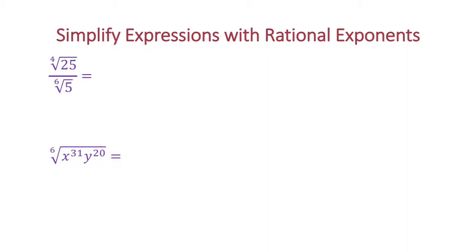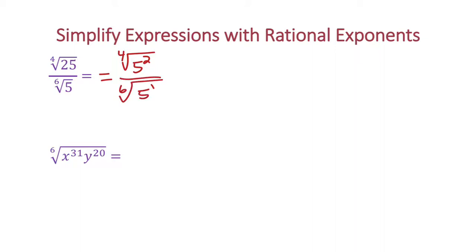Let's simplify expressions with rational exponents. These don't both have the same base, so we need to make them both base 5. To do that, we're going to have the 4th root of 5 to the 2nd power, because 5 squared is 25. Then we still have the 6th root of 5 to the 1st power.